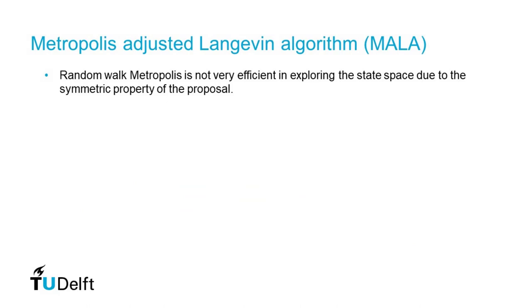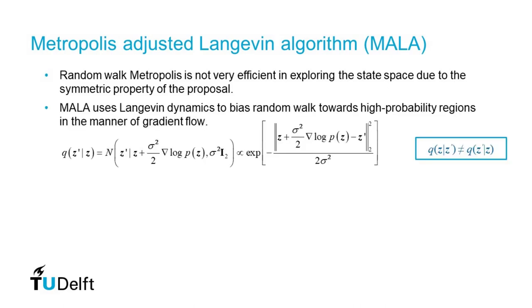However, Random Walk Metropolis is not very efficient in exploring the state space due to the symmetric property of the proposal. To solve this, the Metropolis-Hastings algorithm drops the requirement of a symmetric proposal. Metropolis-adjusted Langevin algorithm (MALA) is a typical example of the Metropolis-Hastings algorithm.